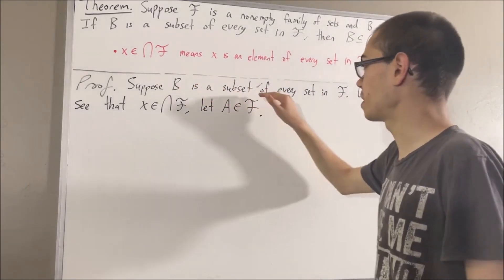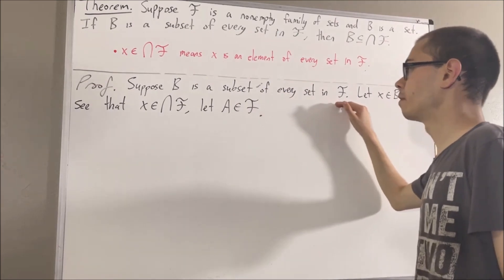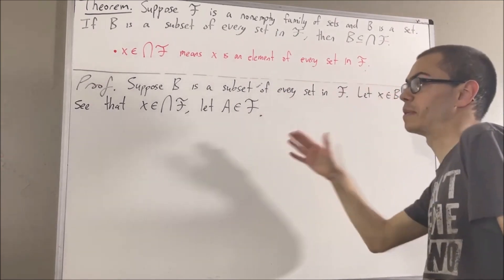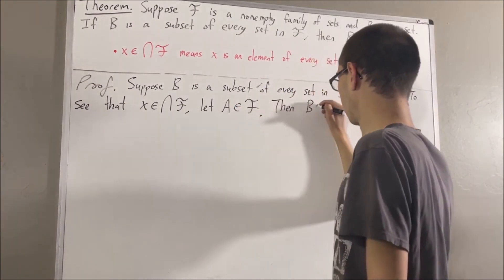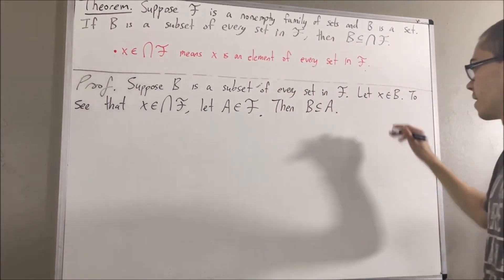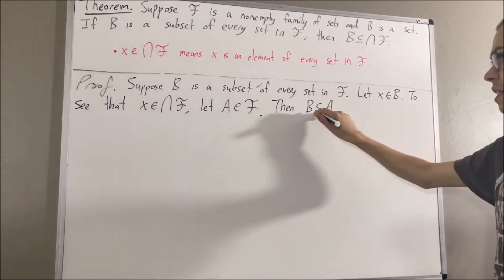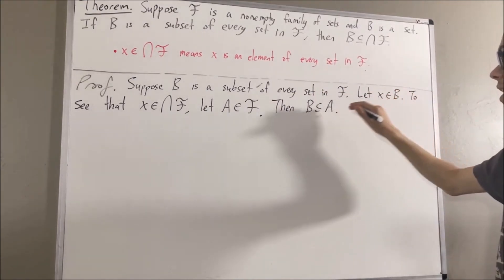Since b is a subset of every set in f, then in particular, b must be a subset of a. And since x is an element of b and b is a subset of a, it follows that x is an element of a.